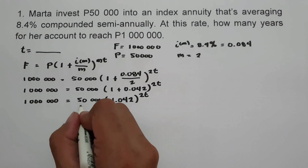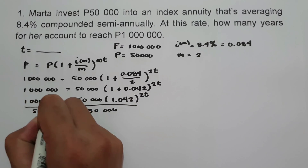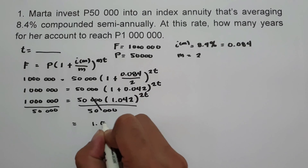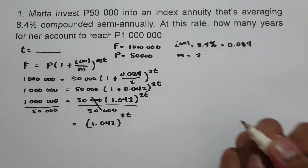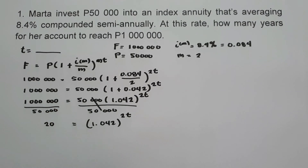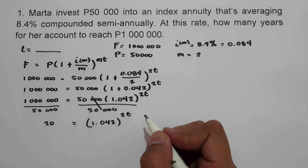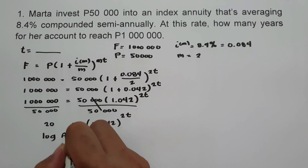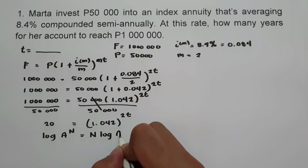Next, let us divide the whole equation by $50,000. So 1,000,000 divided by 50,000 equals 20. We now have 20 equals 1.042 raised to 2T. To find the value of T, we will use the logarithm property: log A raised to N equals N log A, where the exponent is moved in front of the logarithm.